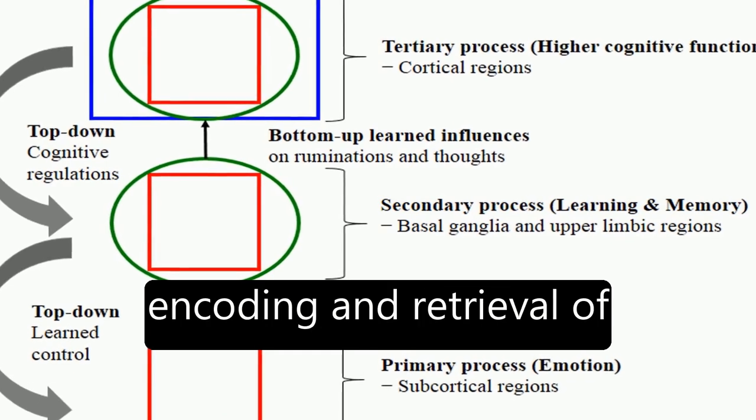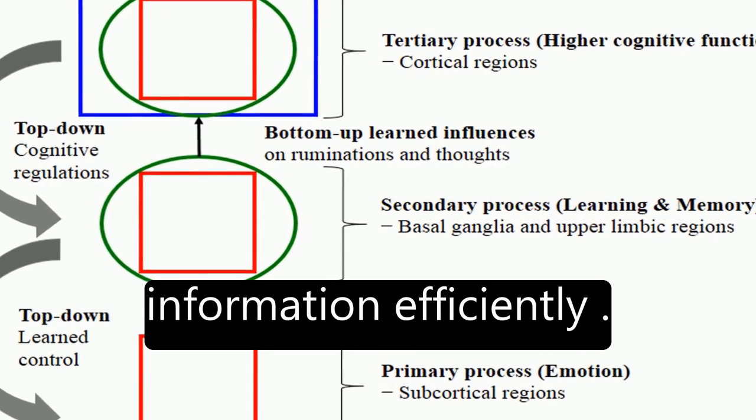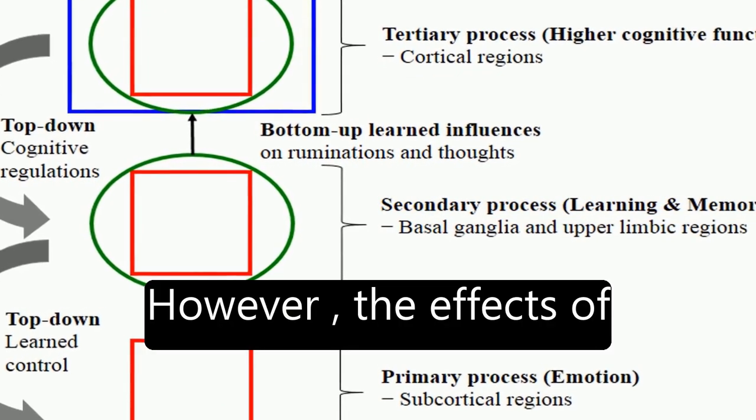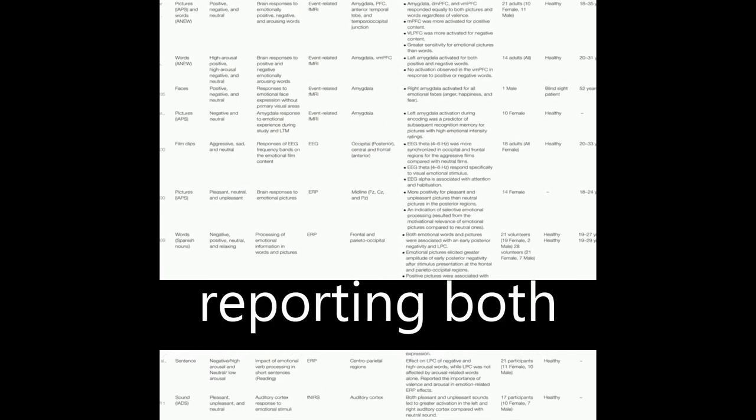Emotion also facilitates encoding and retrieval of information efficiently. However, the effects of emotion on learning and memory are not always univalent, with studies reporting both enhancement and impairment depending on factors.